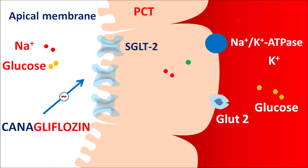Canagliflozin inhibits the SGLT2 transporters, which results in decreased reabsorption of both sodium and glucose. As glucose is less absorbed, it is more excreted, resulting in decreased blood glucose levels. In this way, canagliflozin produces better glycemic control by increasing glucose excretion.